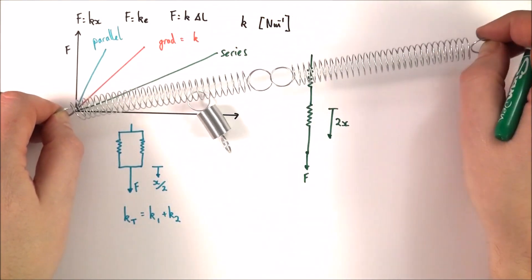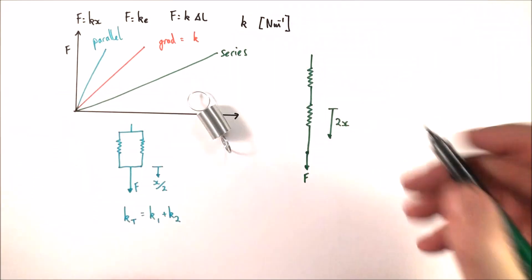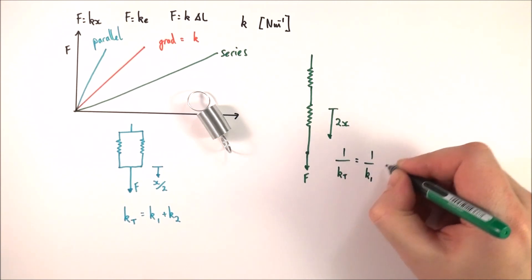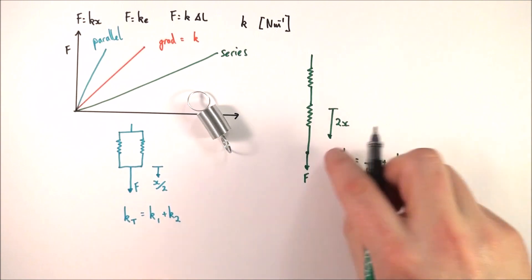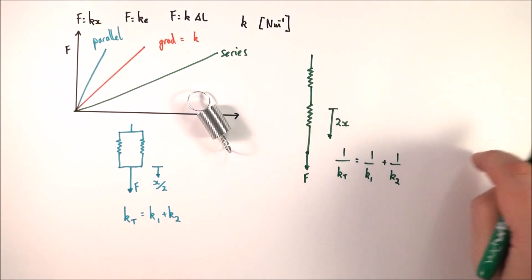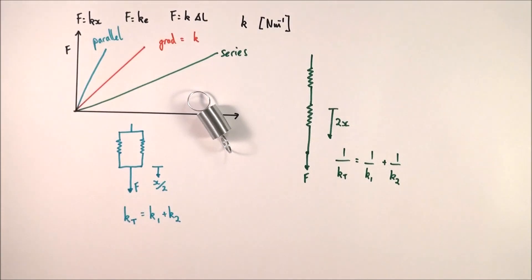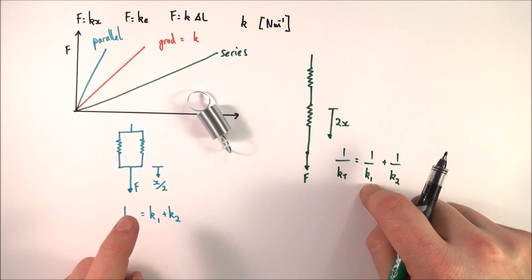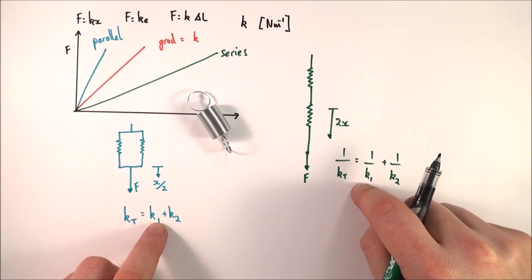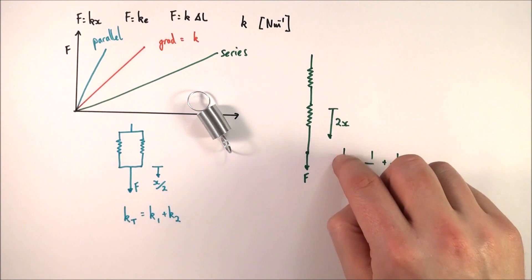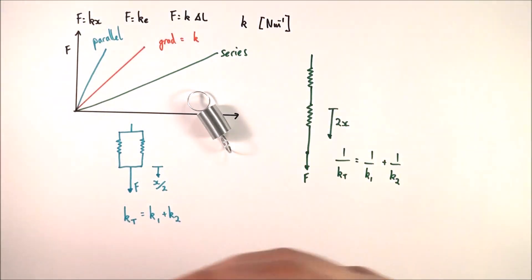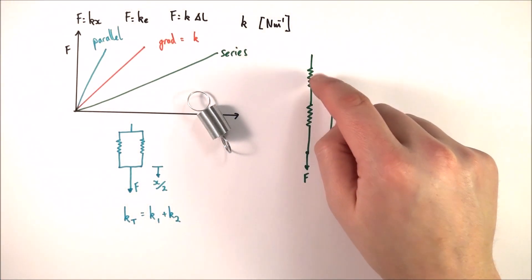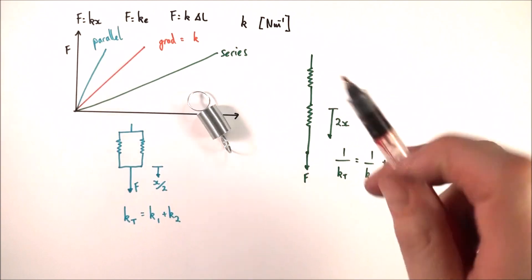With more springs added in series — three or four — for the same force you get an even bigger extension and therefore a lower gradient and a lower spring constant. The equation for springs in series is: 1 over kt equals 1 over k1 plus 1 over k2, and you could extend this with 1 over k3, 1 over k4, depending on how many springs you have. You might notice a similarity between these equations and resistors.